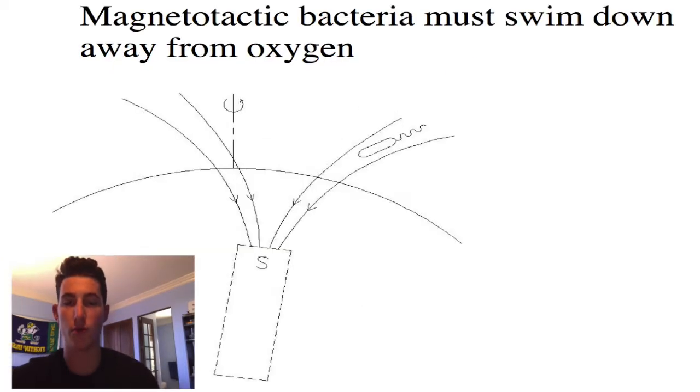Why are these bacteria responsive to magnetic fields? The key is that they're anaerobic, which means they need to avoid high levels of oxygen. Since they live in water, the surface has more oxygen. They need to know which way is down so they can swim in that direction. The magnetic response enables them to know which way is down.